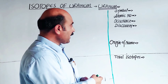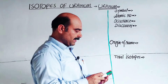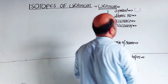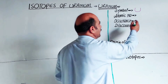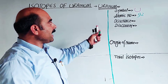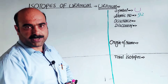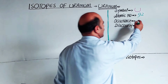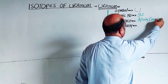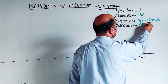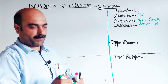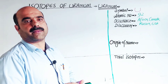Let's cover the basic concepts first. The symbol of uranium is U. Its atomic number is 92. Regarding occurrence, uranium is found in small quantities. It is found in Africa, Russia, and some parts of the USA — the United States of America — in uranium minerals and ores.